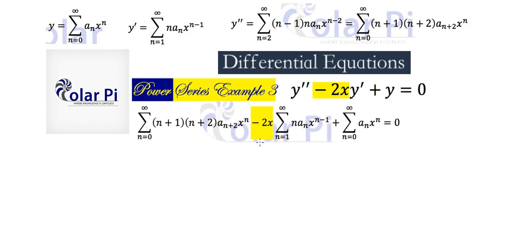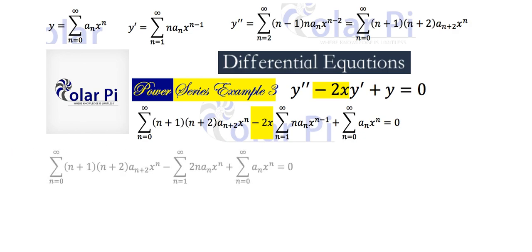In my next step, I'm going to put this 2x inside of the middle sigma. When I do that, I'll have to write it like this — this n did not have a 2 in front of it, now it does, so that must have been this 2. And the x goes in there and changes x to the n minus 1 to x to the n, which is what it should do.